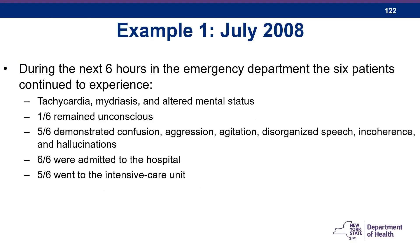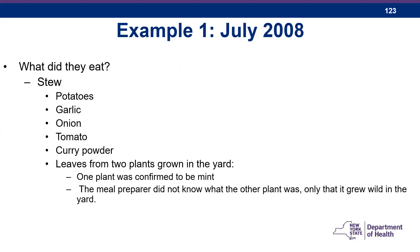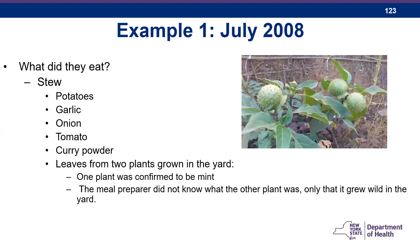During the next six hours in the emergency department, six patients continued to experience tachycardia, mydriasis, and altered mental status. Five of six demonstrated confusion, aggression, agitation, disorganized speech, incoherence, and hallucinations. Six of six were admitted to the hospital; five of six were placed in intensive care. When we looked at the food history, they had eaten a stew containing potatoes, garlic, onion, tomato, curry powder, and leaves from two plants grown in the yard — one was mint, and the other was an unidentified plant growing wild that they thought would taste good in the stew.